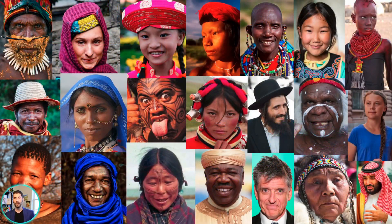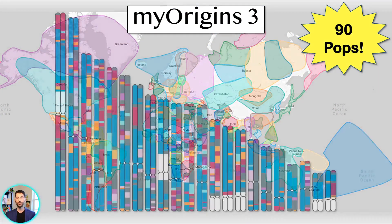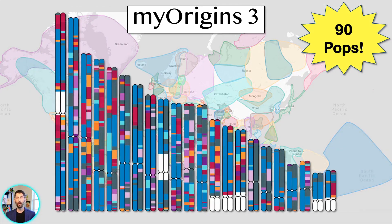We've already seen in the last two videos how diverse human beings are. We've seen that our history is very complex, with hundreds of thousands of years of mixing and isolation and then more mixing. And you now know that MyOrigins 3 has a staggering 90 reference populations, the most currently available in any major percentage test. You've seen that your result comes with a chromosome painting, and in the last video we saw how percentages and the chromosome painting are combined into one result. We also saw how to define an ideal population. But what if populations are not ideal? What if they don't quite meet our definition?